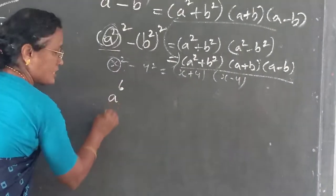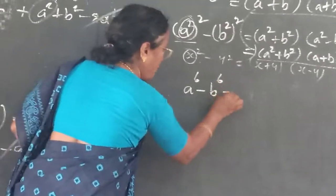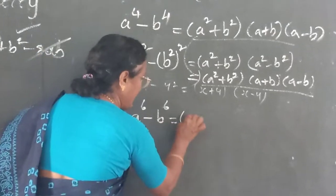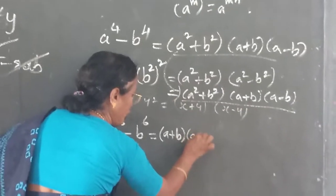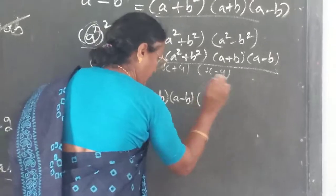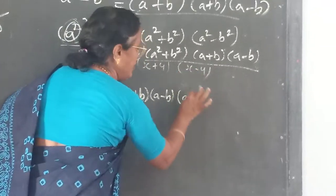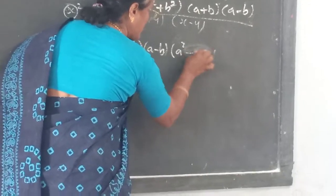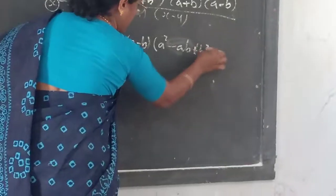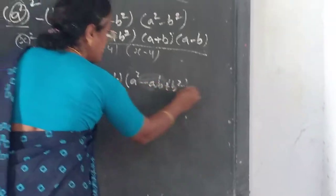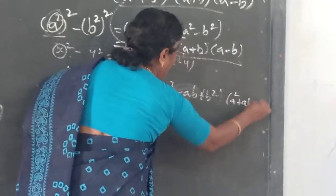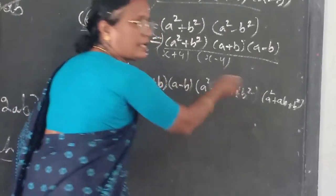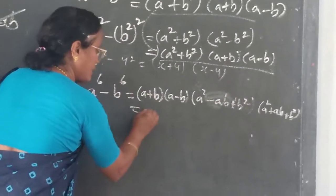Next one: a to the power of 6 minus b to the power of 6. That is nothing but (a + b)(a - b)(a² + b² - ab) — that is (a² - ab + b²). You can change the place and write, no problem. Understand?